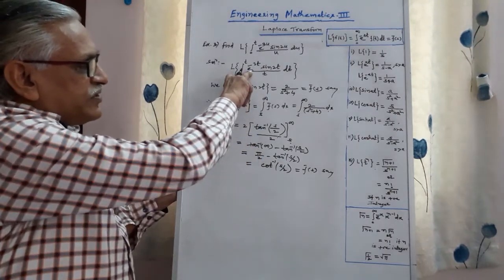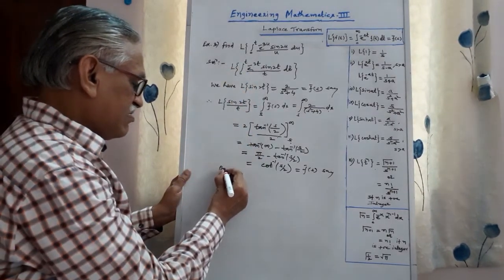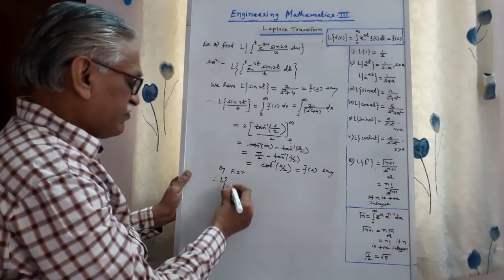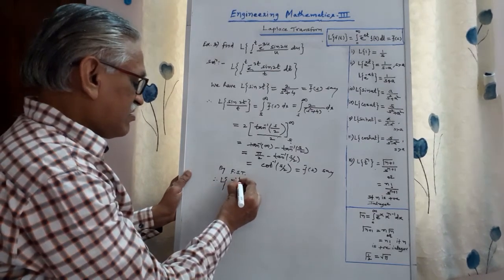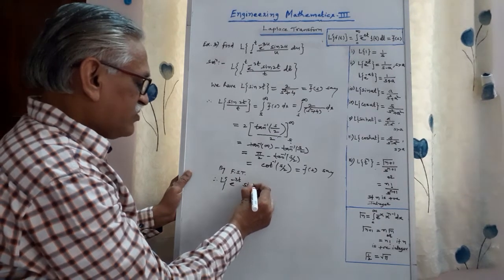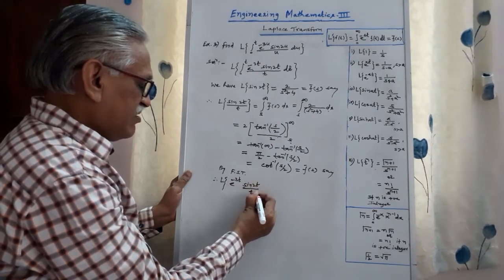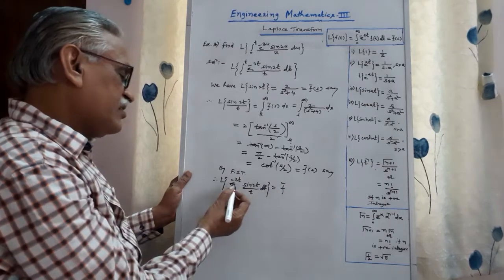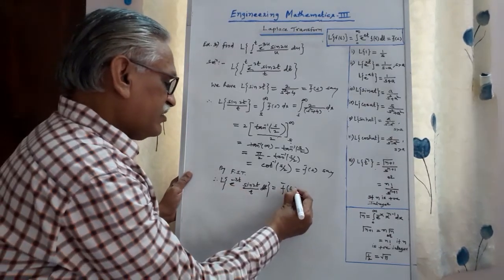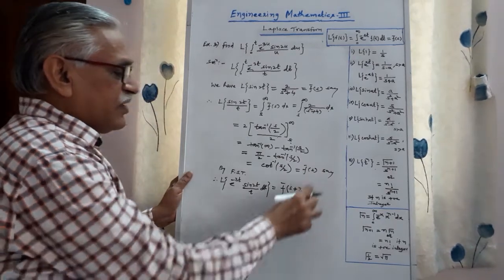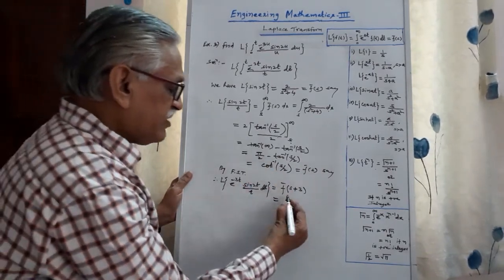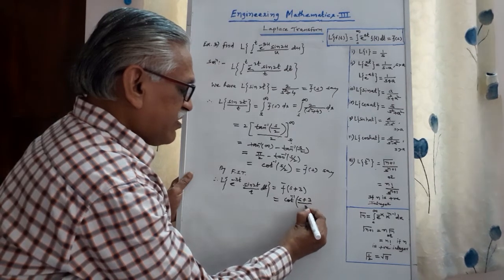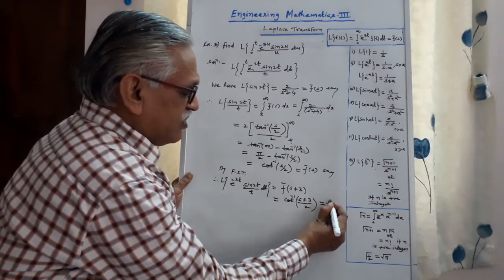Applying the first shifting theorem: the Laplace transform of e^(−3t)·sin(2t)/t is f̄(s) with s replaced by s + a, where a = 3. Replacing s by s + 3 in cot⁻¹(s/2), we get cot⁻¹((s + 3)/2). Once again we call this the new f̄(s).